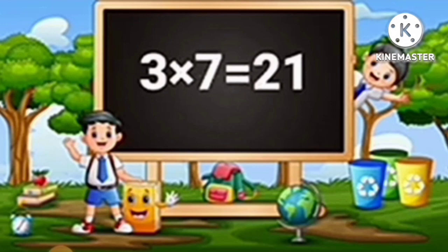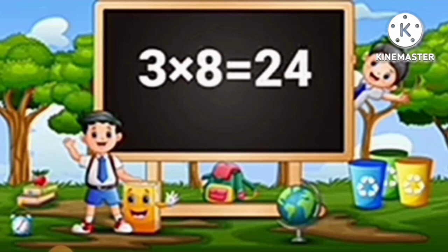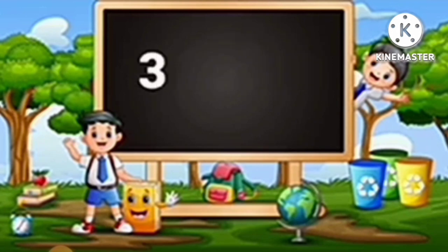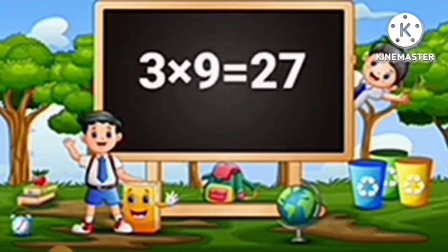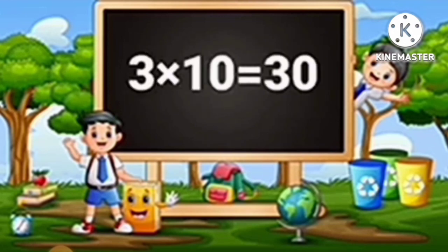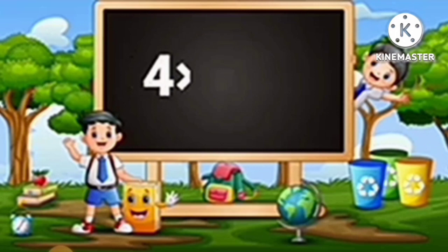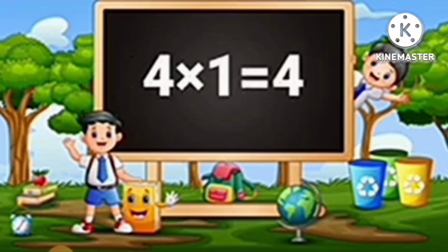3 sevens are 21, 3 eights are 24, 3 nines are 27, 3 tens are 30.